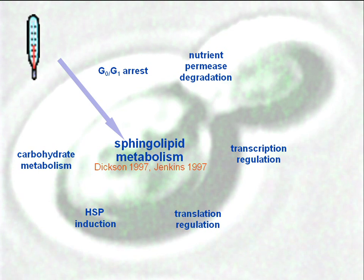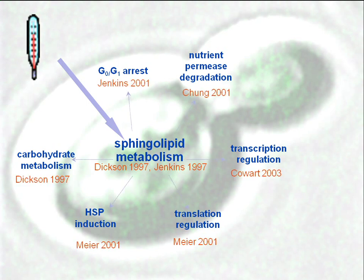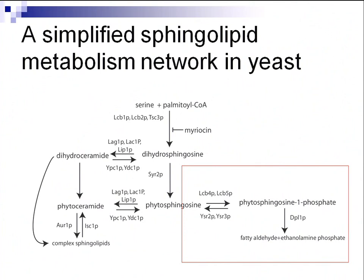That is, if you knock out a gene involved in production of sphingolipids, the heat stress program is altered in a certain way. This is the simplest scheme of sphingolipid metabolism - the novel metabolism. When the cell is under stress, the flux of serine and palmitoyl-CoA is increased. At the very beginning, the product is dihydrosphingosine, and then a hydroxyl group is added to form phytosphingosine. This can be converted to ceramide - phytoceramide.